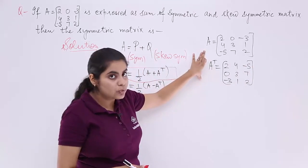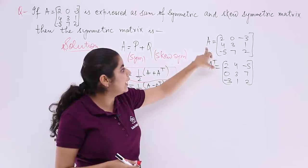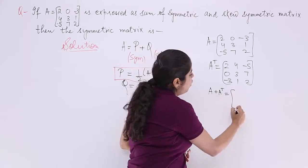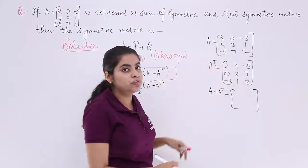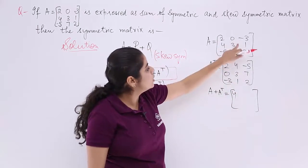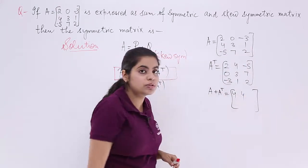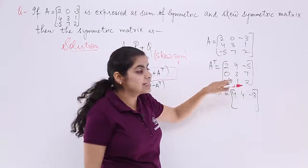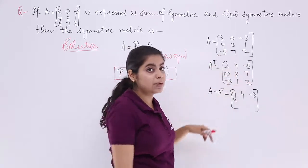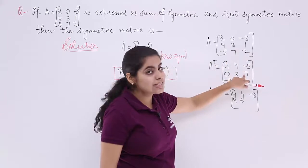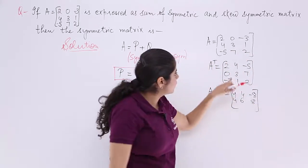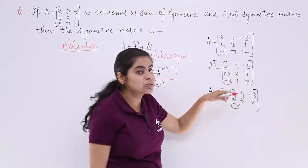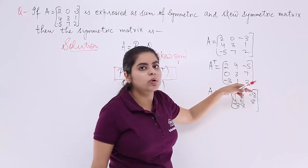Now we compute A plus Aᵀ by adding elements one by one. The results are: 2+2=4, 0+4=4, −3+(−5)=−8 in the first row; 4+0=4, 3+3=6, 1+7=8 in the second row; −5+(−3)=−8, 7+1=8, 2+2=4 in the third row.